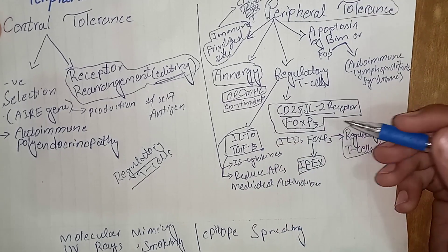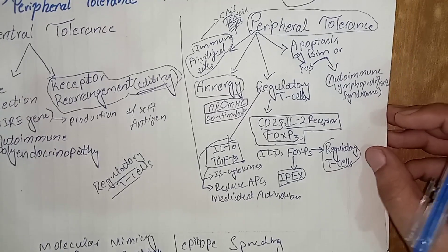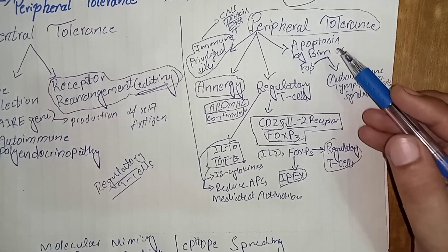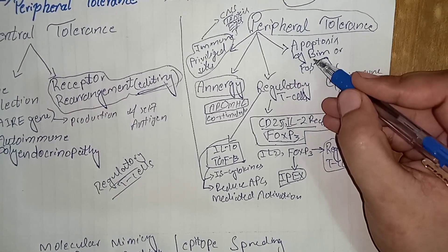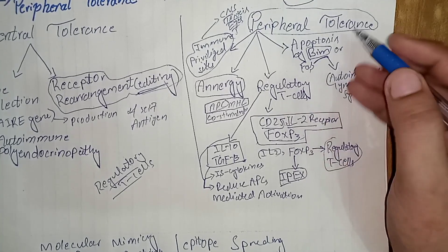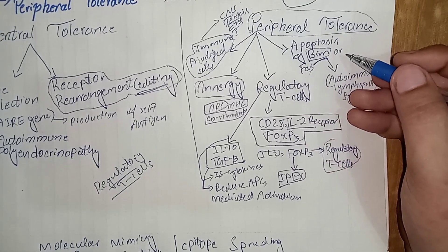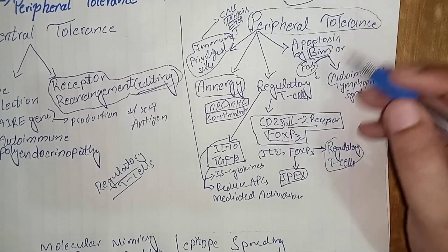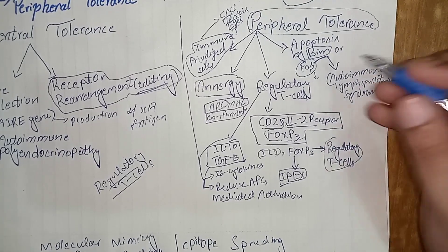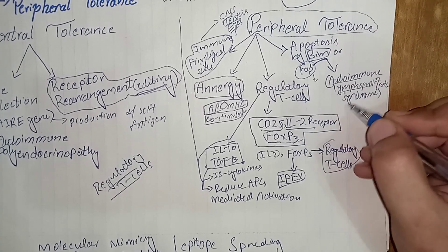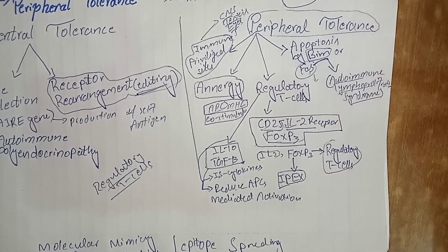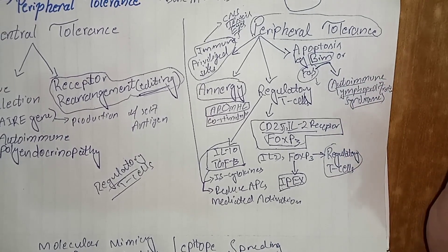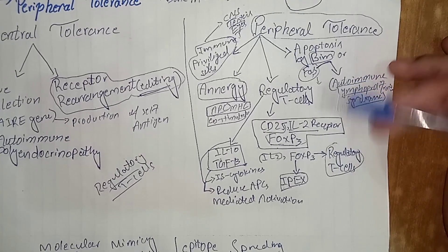Another peripheral tolerance mechanism is apoptosis. T lymphocytes that react with self-antigen may undergo apoptosis via a specific apoptotic regulator called BIM, or through engagement of FAS receptors. Any dysregulation or mutation in the FAS receptor mechanism can lead to autoimmune lymphoproliferative syndrome, an autoimmune condition in which tissue damage and destruction may occur.